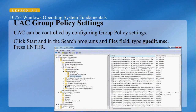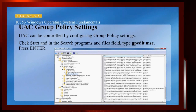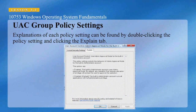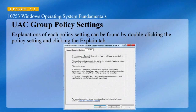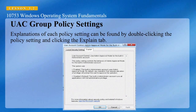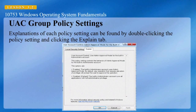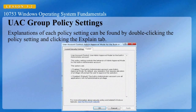UAC group policy settings can be controlled by configuring group policy settings. Click Start, type gpedit.msc in the search field, and press Enter, and you'll be presented with a dialog box. UAC policy settings can be located within the local group policy editor by clicking Computer Configuration, Windows Settings, Local Policies, Security Options. This is normally configured through domain-based policies. UAC settings are at the bottom of the list. Explanations of each policy setting can be found by double-clicking the policy setting and clicking the Explain tab, and you'll get an explanation as well as a link to a Microsoft website for more information.